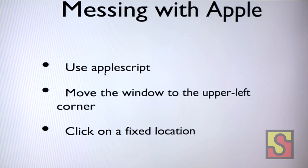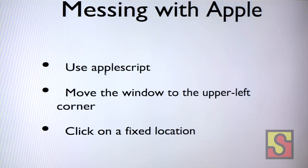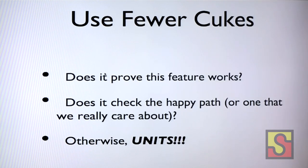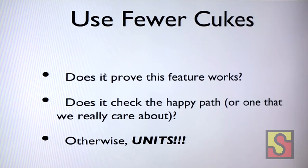Another trick we learned was that sometimes you have to use device location or click on one of those alerts that Frank or UIAutomation or a different testing framework doesn't allow you to interact with. So we used AppleScript — we moved the window to the upper left-hand corner of the screen so we knew where it was, and then clicked on a fixed location. The last thing we learned is that we should use fewer cukes.